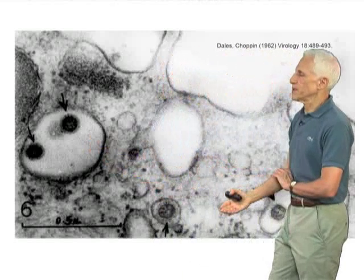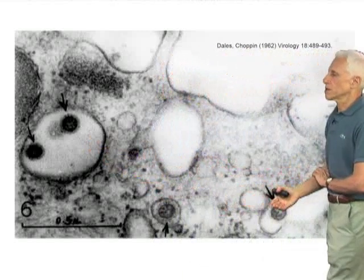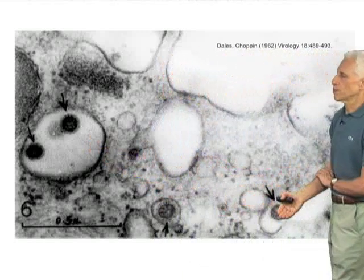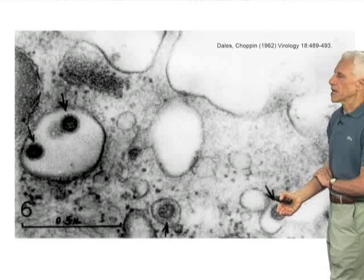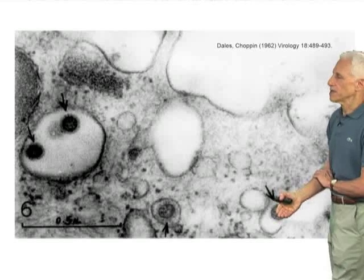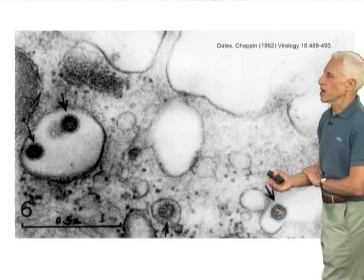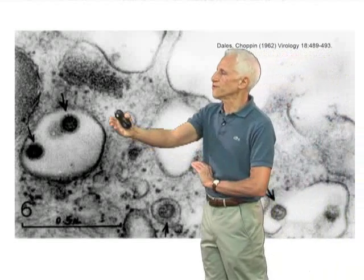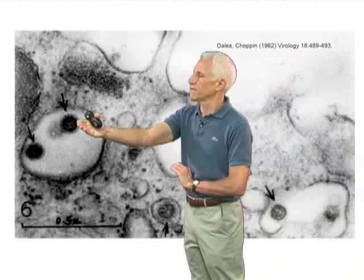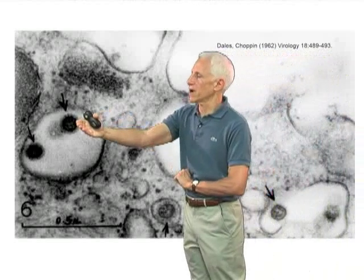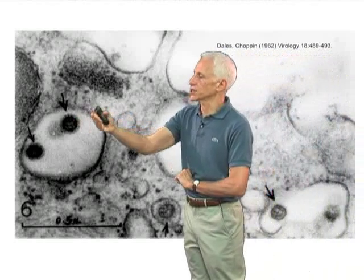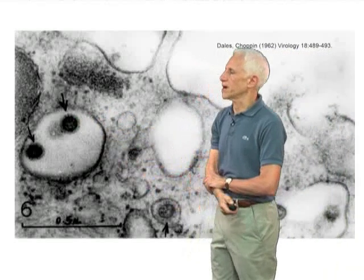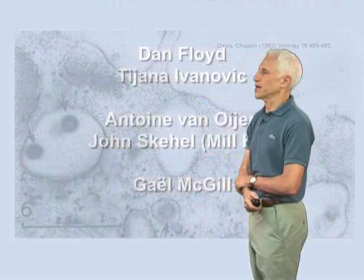You can actually see some of them in cross-section here, probably into the cytoplasm through fusion of the lipid bilayer of the virus with the lipid bilayer of the endosome.